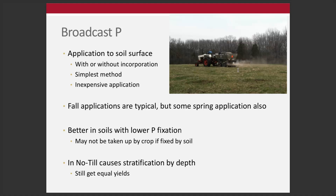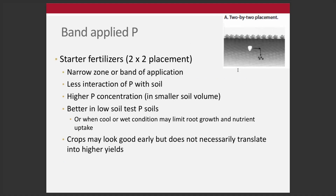Banding phosphorus fertilizer — the 2x2 placement, two inches over and two inches down — uses a disc opener to place the seed and another disc opener for the fertilizer, which is very common on planters. Because we're putting starter fertilizer in a band, there's less interaction with the soil and less volume experiencing fixation. Compared to a broadcast application, when the seed starts to grow it will have really good access to a highly enriched phosphorus zone right there, which can be very advantageous for plants.